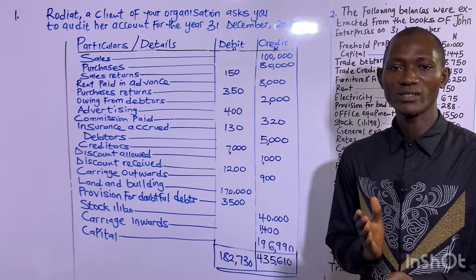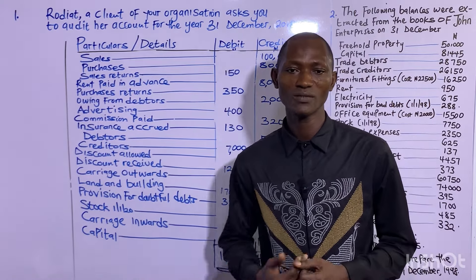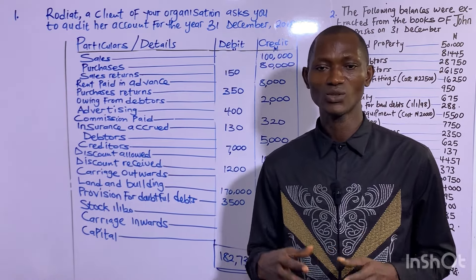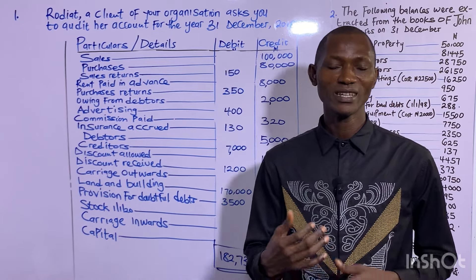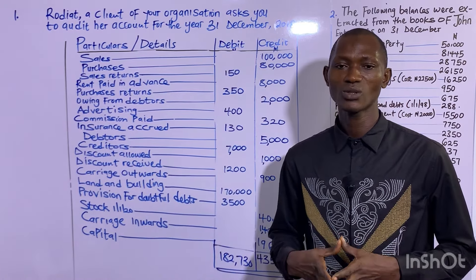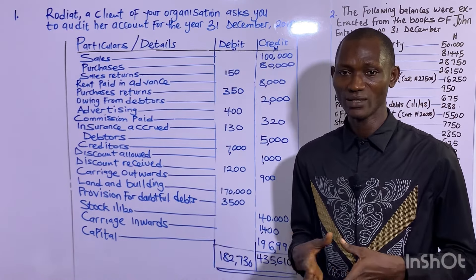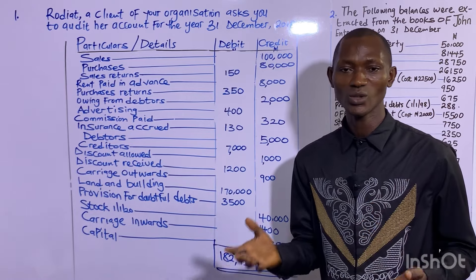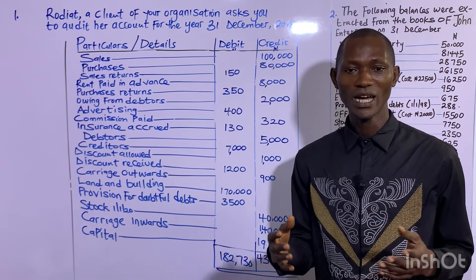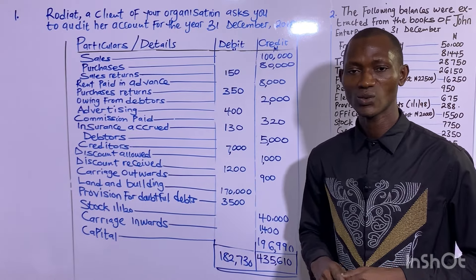There are three dimensional ways in which questions could be set on trial balance. The first is where you'll be given lists of business transactions to complete the double entry and extract the trial balance. The second way is where you'll be given an already prepared trial balance where the two sides fail to agree. The third is where you'll be given a list of balances and asked to extract the trial balance.